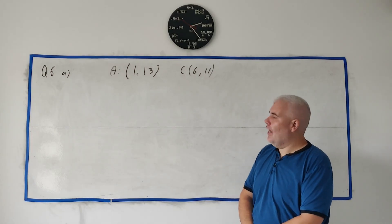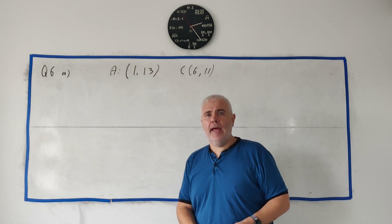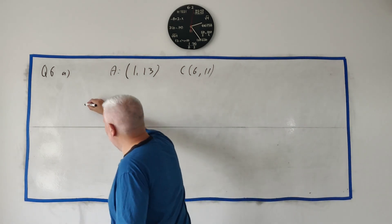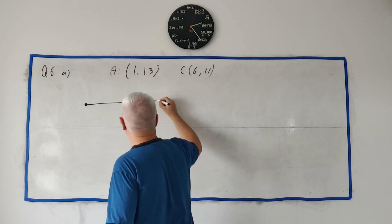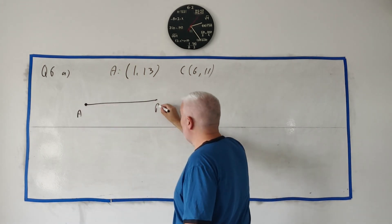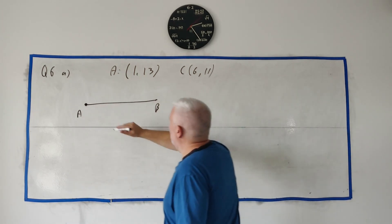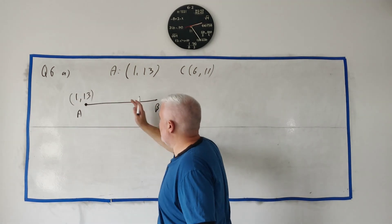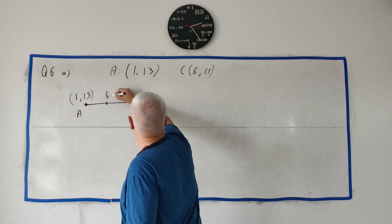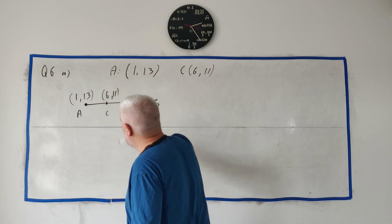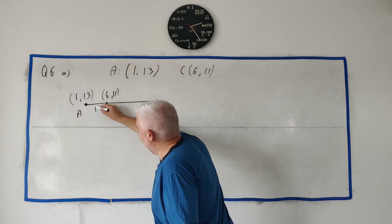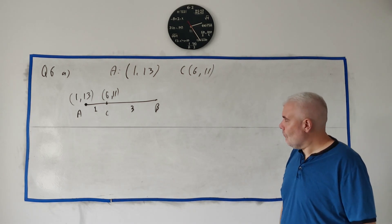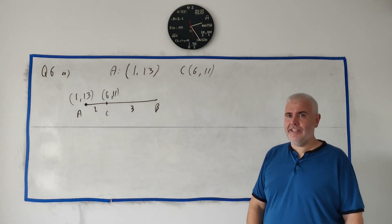Question 6 part A tells us about a line that's been divided in a ratio of 1 to 3. The line goes from A to B — we don't know B, we're looking for it. We know A is (1, 13), and point C at (6, 11) divides it in the ratio 1 to 3, so for every 1 in the first length there are 3 in the second.